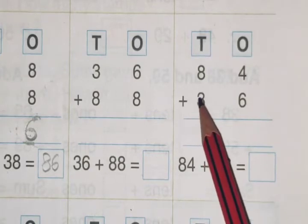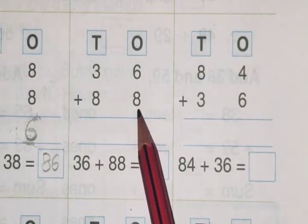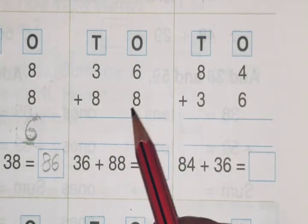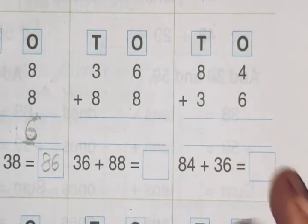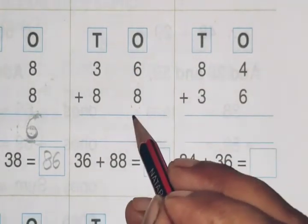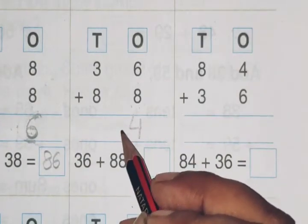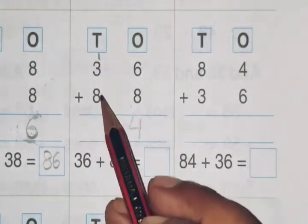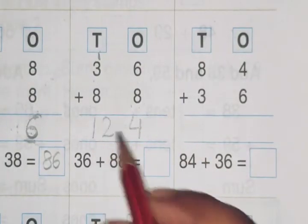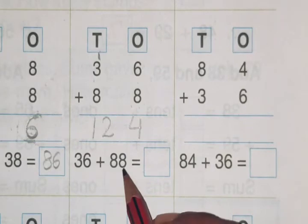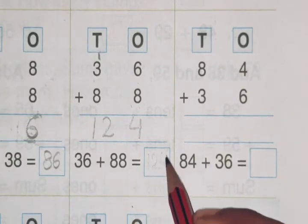Now the next question is 36 plus 88. So what will we do? Add 6 and 8. 6 plus 8 is 14. 4 here, 14 ka 1. 8 plus 3 is 11, and 1 is 12. And your answer is 36 plus 88 is 124.